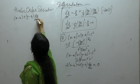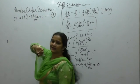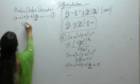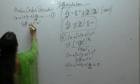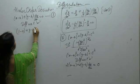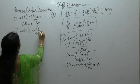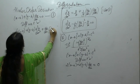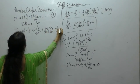dy upon dx is equal to 0. Let this be equation 1. Now again differentiate with respect to x. Derivative of x is 1, a is 0. First function times derivative of second plus second function times derivative of y, and derivative of b is 0.